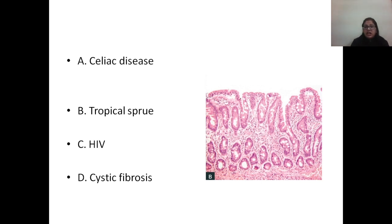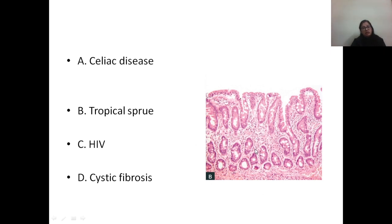The confirmatory test for diagnosis is duodenal biopsy. Once serology is positive, the patient should not be shifted directly to a gluten-free diet, because biopsy changes will not be appreciated if gluten is already eliminated. The child should be continued on a normal diet, the endoscopic biopsy done, and only after that should gluten be eliminated. Apart from wheat, barley and rye also have to be excluded from the diet.